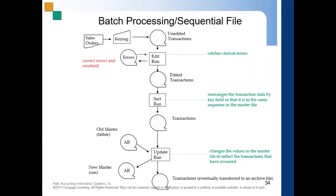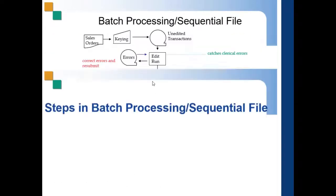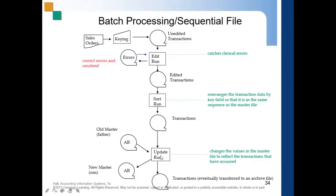This is an example of batch processing using a sequential file. You receive a sales order, then you send it to the magnetic file as non-edited transactions. Then you run the edit — if there are errors, you correct errors and resubmit. Once the errors are corrected, you have edited transactions. Then you do a sort run, which rearranges the transaction data by key field so that it is in the same sequence as the master file.